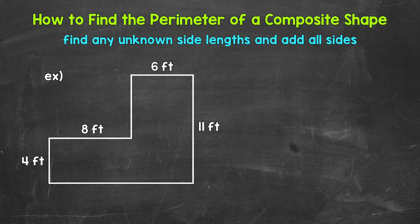Remember, the perimeter is the distance around the outside of a shape. We need to add all of the sides in order to find the perimeter of something.